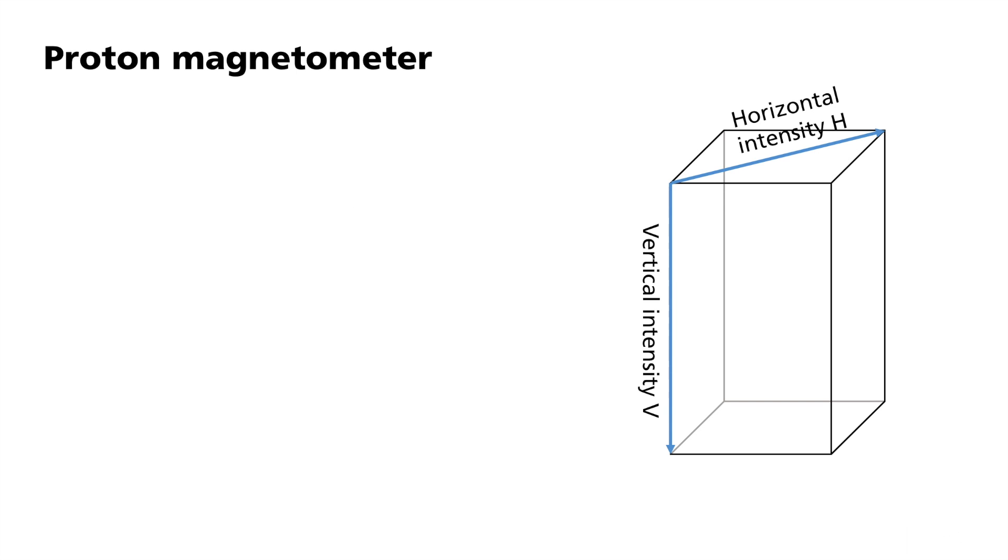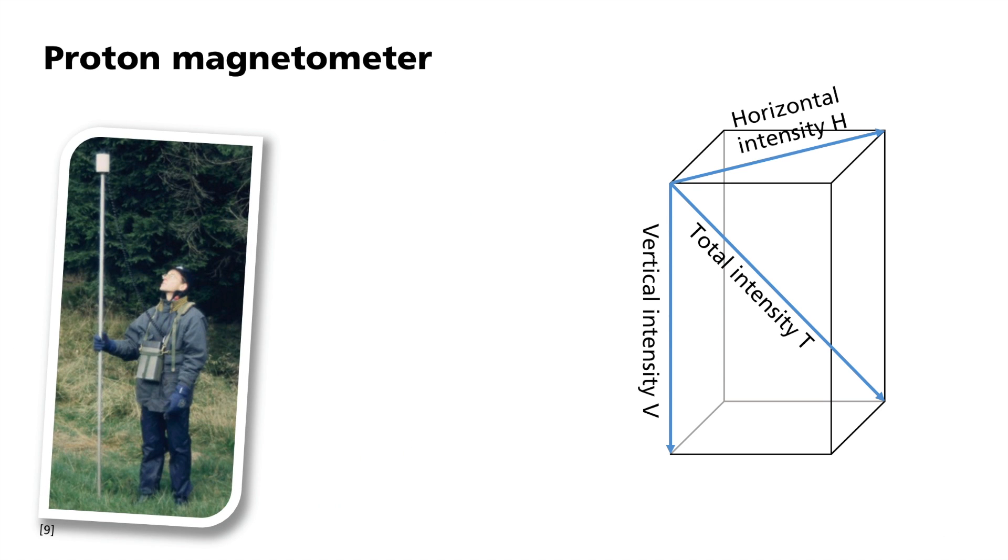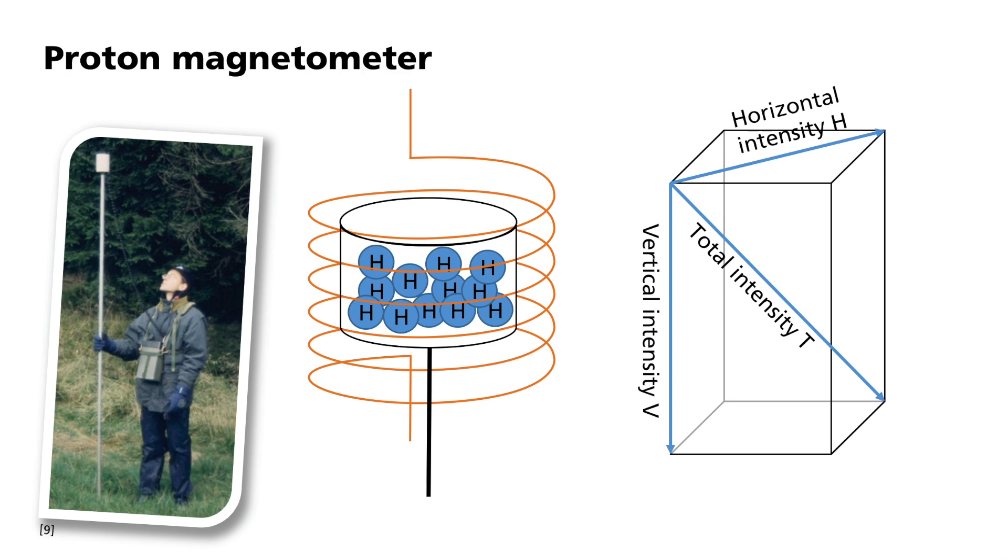The proton magnetometer, on the other hand, measures the size of the total intensity T. The instrument consists of a non-magnetic small container, which is usually filled with petroleum or water. Both contain a large number of hydrogen atoms that are required for this form of measurement. Around the container, a coil is attached, which is used to initially apply a strong magnetic field. This field then aligns the nuclear spin of the protons in the direction of the magnetic field. Then the artificial magnetic field is removed, so that the protons are only exposed to the external magnetic field being measured.